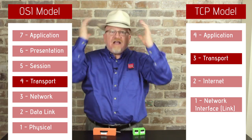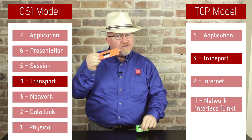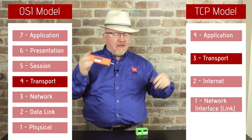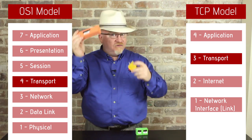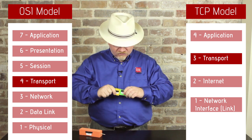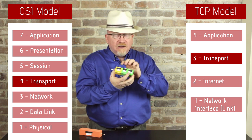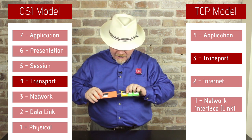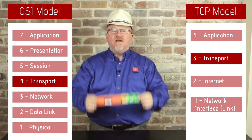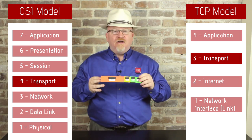Now I'm the transport layer. What I'm going to be doing is taking a look at this data. Now this is a lot of data, and if I'm a web server, this is probably a great big web page. So I'm going to have to bring in some sequencing numbers. I'm going to start breaking all the data up into individual chunks that are big enough for individual IP packets. And I'm going to be making a very pretty TCP segment. Once the TCP segment is done, I have to go down to the next layer.